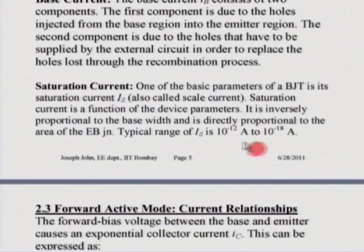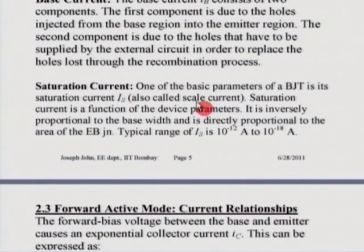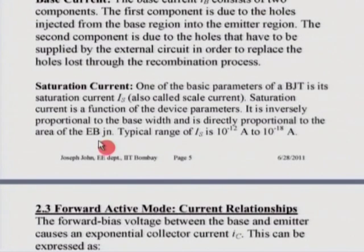There is another important current — a very basic device parameter for a BJT — called the saturation current, indicated as I subscript S in equations. This current is also called the scale current, because it is directly proportional to the area of the emitter-base junction and inversely proportional to the base width. The typical range of I_S is between 10⁻¹² to about 10⁻¹⁸ amps.